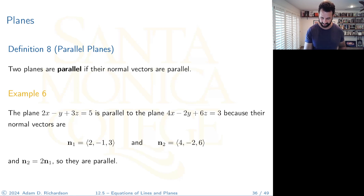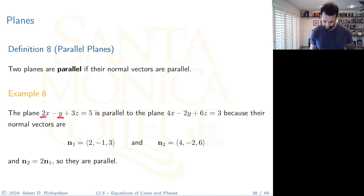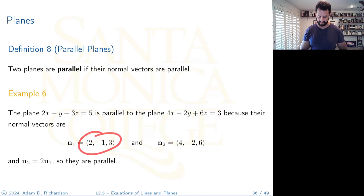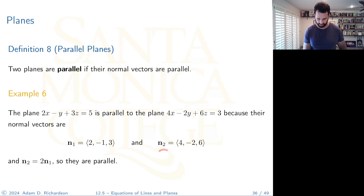Here's a quick example. These two planes are parallel because their normal vectors are parallel: n₁ = ⟨2, −1, 3⟩ and n₂ = ⟨4, −2, 6⟩. Since n₂ = 2n₁ — they are scalar multiples — the vectors are parallel, and therefore the planes are parallel.